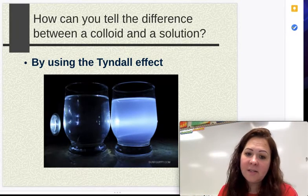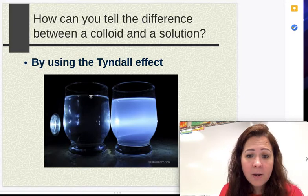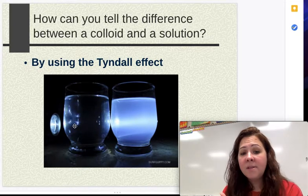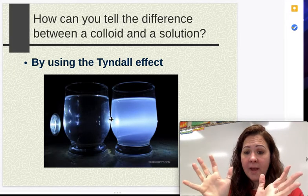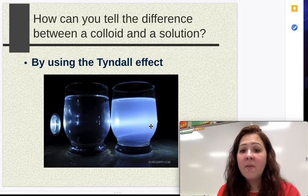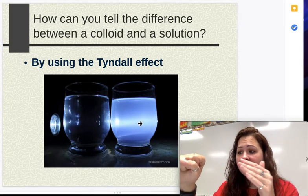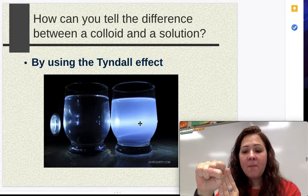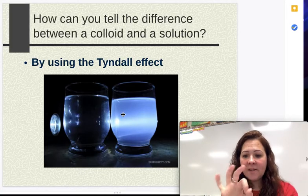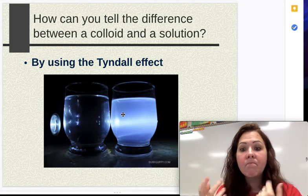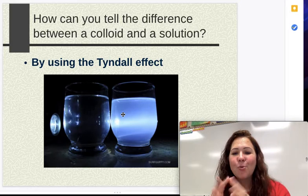With the Tyndall effect test, you can see it in the picture here. In the cup on one side, we have a solution — I know it's a solution because the light passes all the way through it. The particles are not big enough to scatter the light. The other cup, however, is a colloid — when the light hits it, the particle is big enough that it acts like a roadblock, making the light reflect away. It kind of glows because the light is actually scattering throughout the liquid.